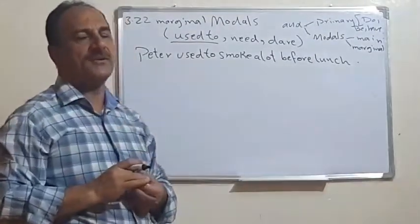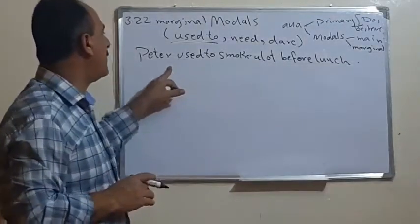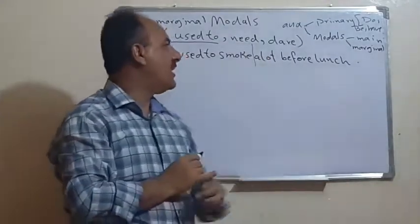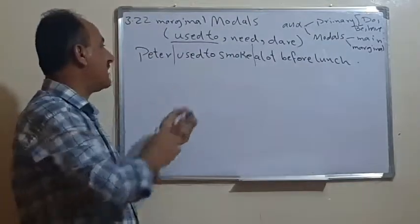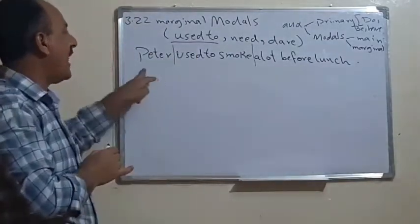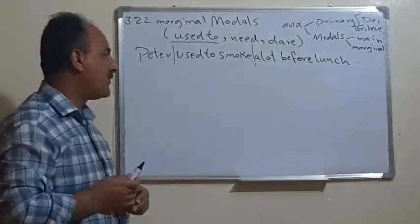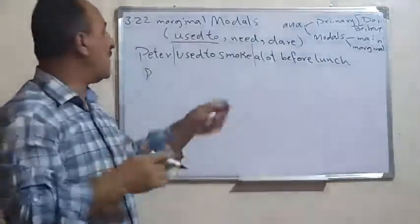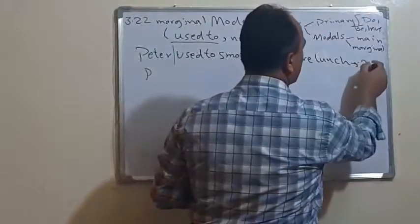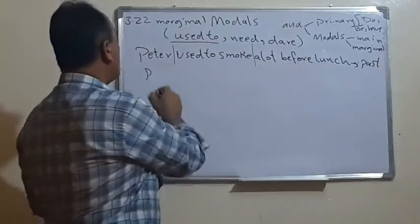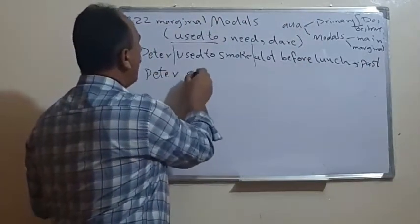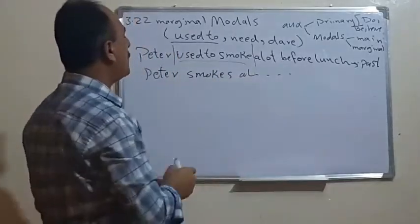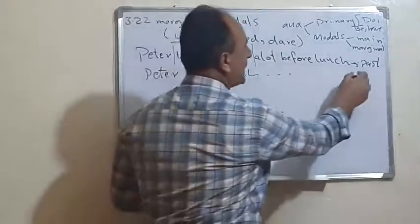In the sentence 'Peter used to smoke a lot before lunch', 'Peter' is the subject, 'used to smoke' is the verb, and 'before lunch' is the complement. The present form of this would be 'Peter smokes a lot', where the whole verb phrase 'used to smoke' is changed into the single word 'smokes'.